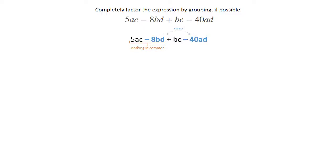It looks like the negative 8BD and the negative 40AD would be a nice thing to swap, because you'd like to keep it plus, minus, plus, minus if you can.